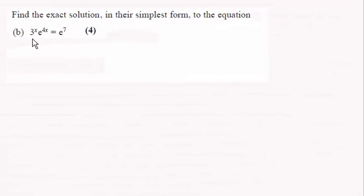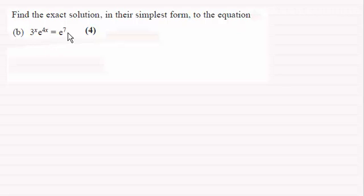Hi. For this question, we've got to find the exact solution of 3 to the power x times e to the power 4x equals e to the power 7, and give the answer in its simplest form.